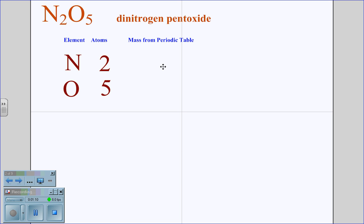Then we're going to look up on the periodic table the gram mass or atomic mass unit of each of those elements. And we know that nitrogen is 14.01 and oxygen is 15.99.